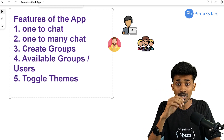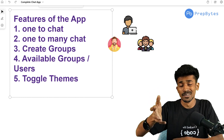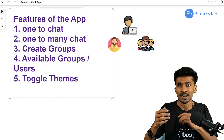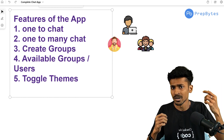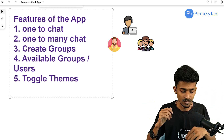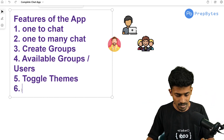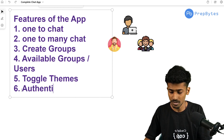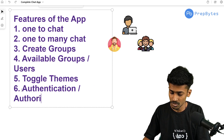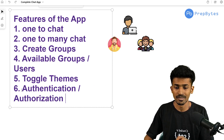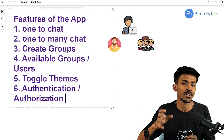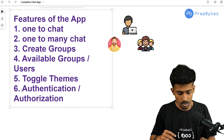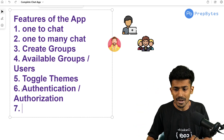Another feature we want is persistent chats. If you text someone and close the application, the next time you log in your chats should still be there. Speaking of logging in — yes, we need authentication and authorization as well, so that our app is on the safer side. We'll discuss authentication and authorization in more detail when we move on to the back end.